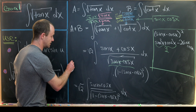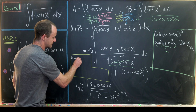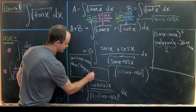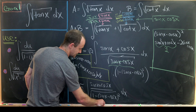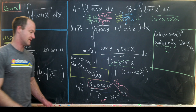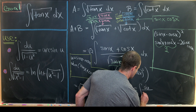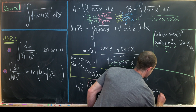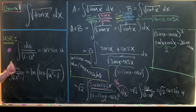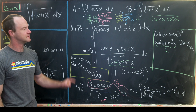Now we substitute u = sin x - cos x, so du = (cos x + sin x) dx = (sin x + cos x) dx. The numerator is exactly du, and the denominator becomes √(1 - u²). So A + B = √2 ∫ du/√(1 - u²) = √2 · arcsin(u) = √2 · arcsin(sin x - cos x).